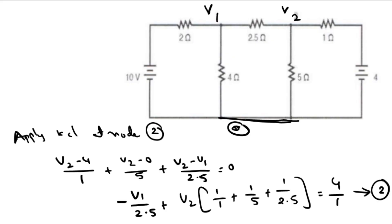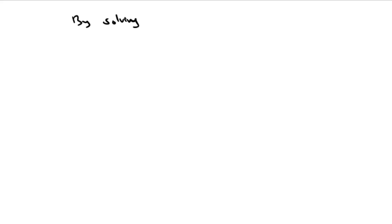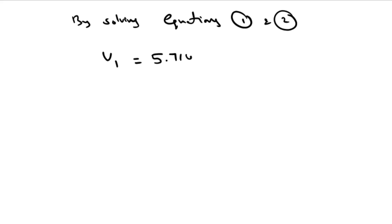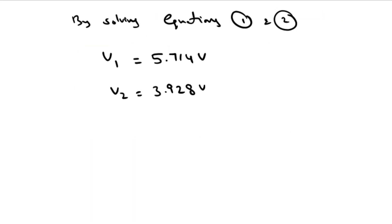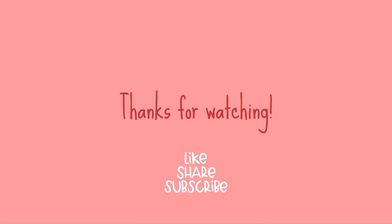By solving equations 1 and 2, we obtain V1 equal to 5.714 volts and V2 equals 3.928 volts. The node voltages are V1 = 5.714 volts and V2 = 3.928 volts. Thank you for watching — please like, share, and subscribe.